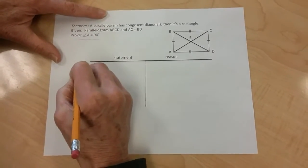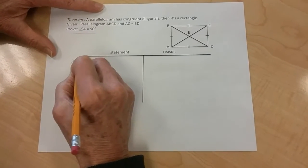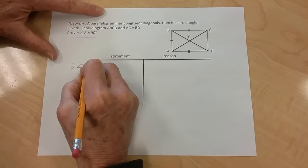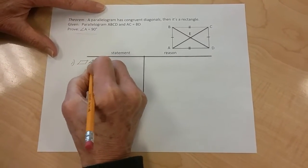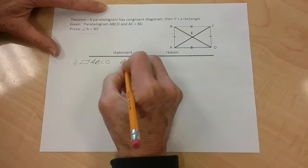First thing, of course, I'll put down here is number one, my given. So I'm going to draw a little picture right here of a parallelogram: A, B, C, D.